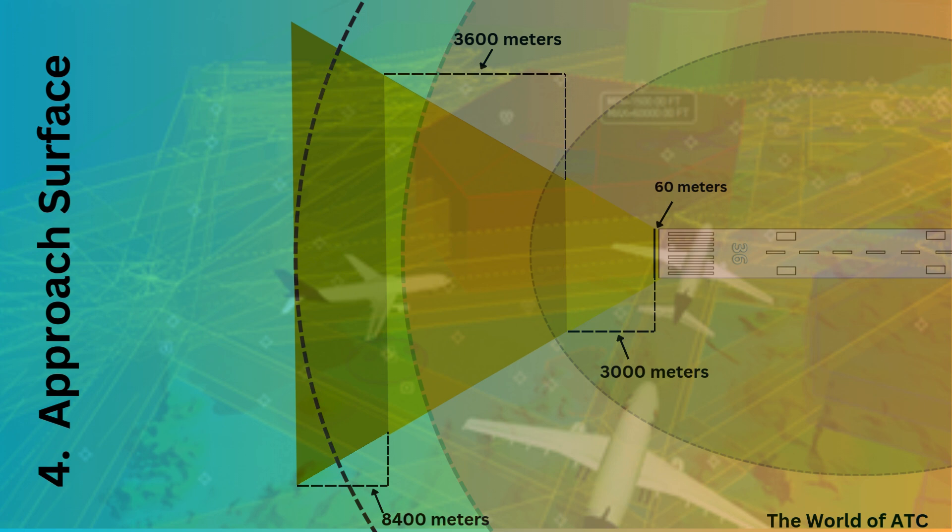Zooming in for one runway, we can see the first plane starts from the strip of runway that is 60 meters from the runway threshold and has a length of 3,000 meters. The second surface connected to the first one has a length of 3,600 meters, and the third surface connected to the second one has a length of 8,400 meters. Overall, all three surfaces add up to 15 kilometers, which is the total extent of the obstacle limitation surfaces.